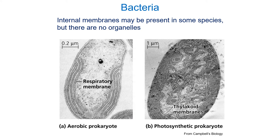Bacteria don't have organelles, but they may have internal membranes. An aerobic prokaryote uses oxygen to liberate energy from food the same way our mitochondria do, and has membranes containing proteins, protein channels, and ATP synthase — much like mitochondria. In photosynthetic prokaryotes, we can have internal membranes containing protein channels and enzymes needed for photosynthesis. These internal membranes aren't technically organelles, but they increase the area to which important proteins and enzymes can be attached.